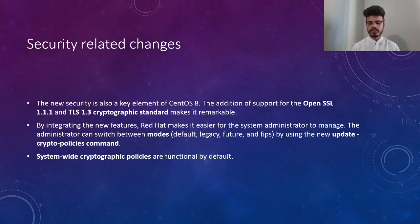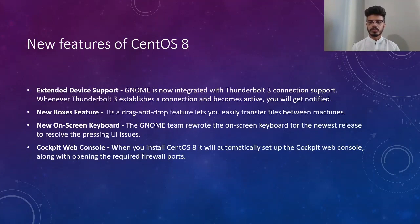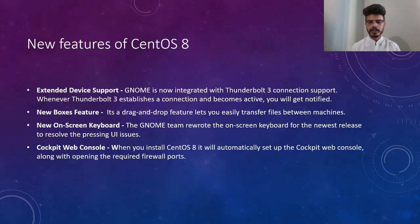Now let's look at new features of CentOS 8 not present in CentOS 7. First is extended device support: GNOME, the default file manager, is now integrated with Thunderbolt 3 connection support — whenever a Thunderbolt 3 connection becomes active, you will be quickly notified. Another feature is the new Boxes feature, which allows you to drag and drop to easily transfer files between two network machines.